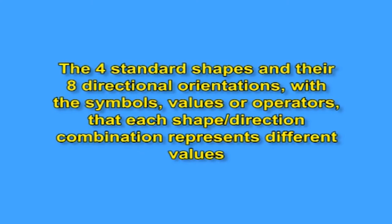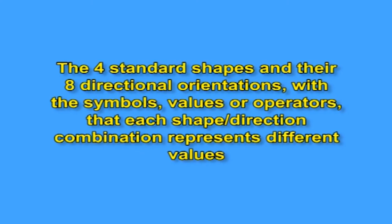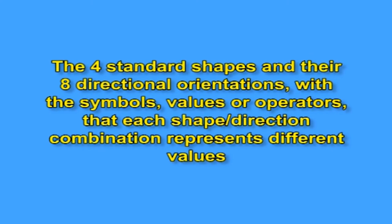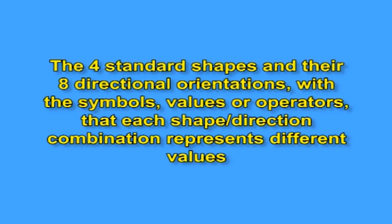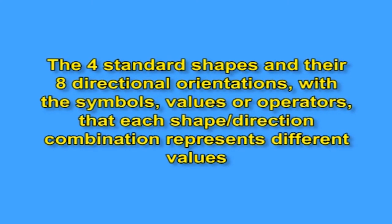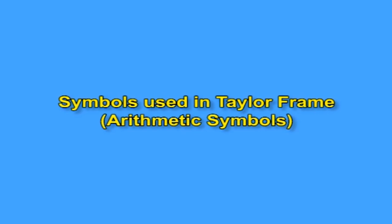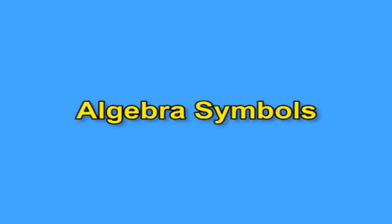The four standard shapes and their eight directional orientations represent different values. First we will see the symbols used in the Taylor frame: arithmetic symbols and algebraic symbols. The two flatter-type and triangle-shaped pegs are algebraic symbols, and these algebraic symbols also have 16 positions.